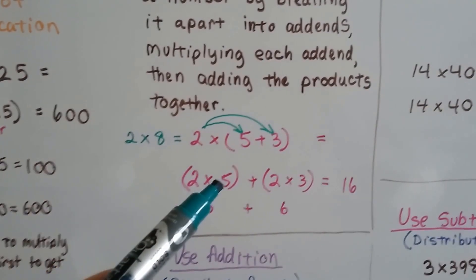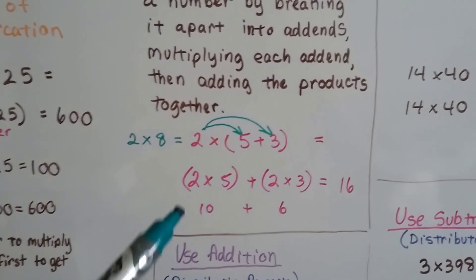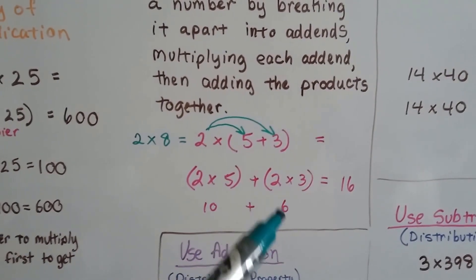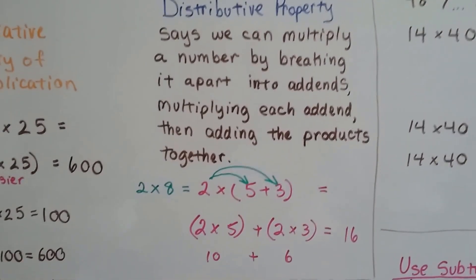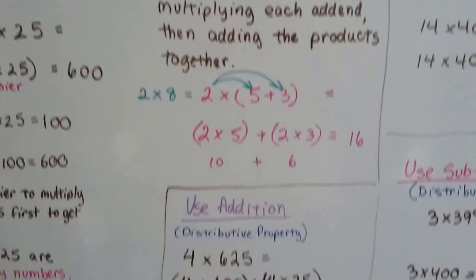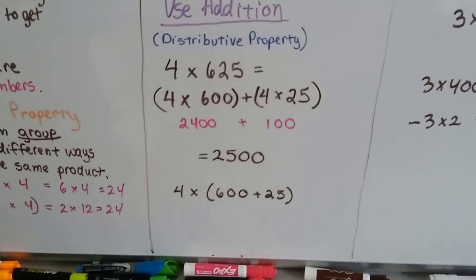That is 2 times 5 plus 2 times 3. 2 times 5 is 10, and 2 times 3 is 6, so that's 16. The distributive property helped us. That's using it for addition.